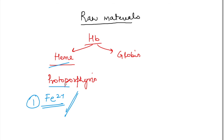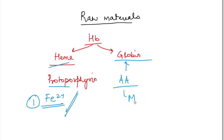The other thing is that globin also needs to be synthesized in the body. Globin is a protein, so for this protein we need amino acids. When amino acids decrease in the body — like in malnutrition — our hemoglobin will not be synthesized, leading to anemia in malnutrition because the globin component is not synthesized.